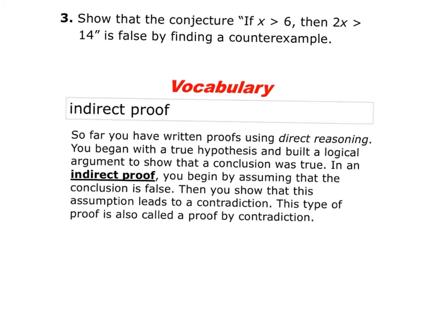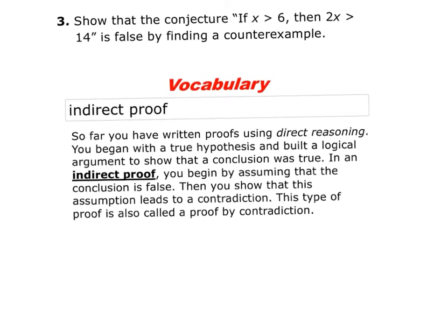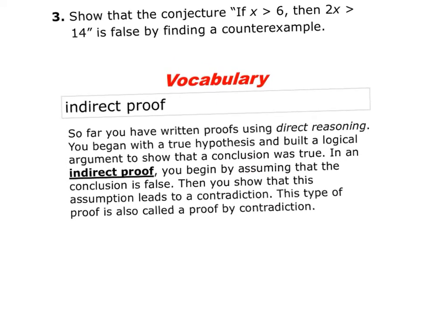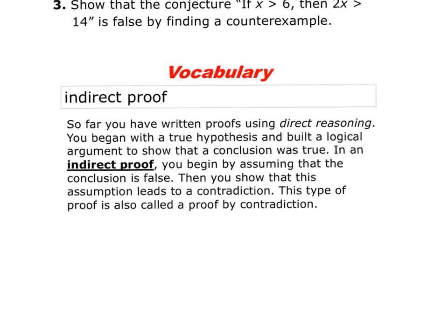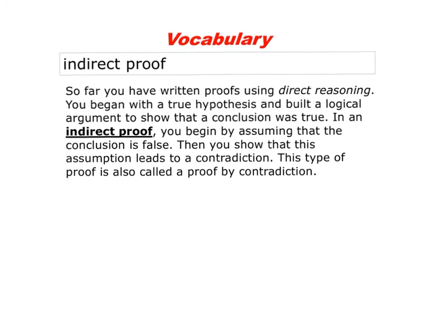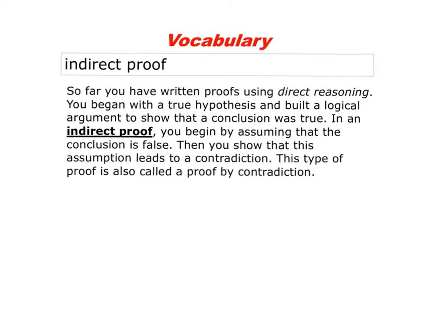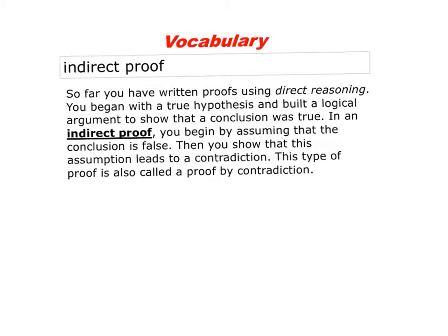An indirect proof is basically a proof in which you assume that what you're trying to prove is wrong, and you contradict that by providing an example which would make that false.